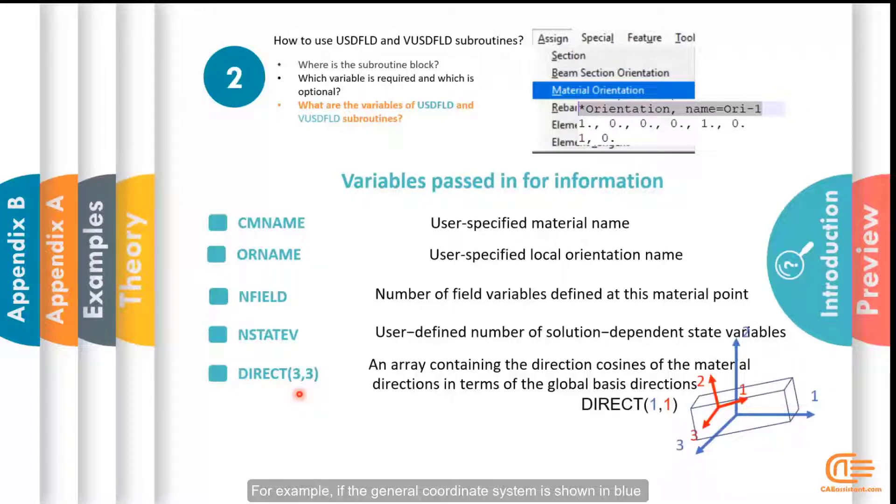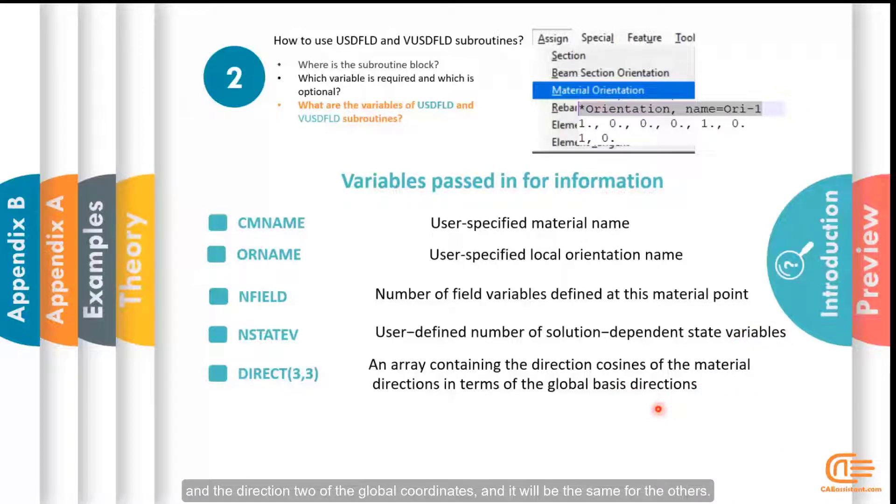For example, if the general coordinate system is shown here and the material coordinate system is shown in red, then direct 1,1 is represented. As you can see, each of them is colored red and blue, indicating that the direction 2,1 is the cosine angle formed by the direction 1 of material and the direction 2 of the global coordinates, and it will be the same for the other.